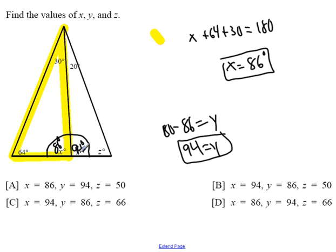Once I know this is 94 and this is 20, now I can find Z. I just have to add 94 plus 20 and then subtract it from 180, and I get my Z. 94 plus 20 is 114.